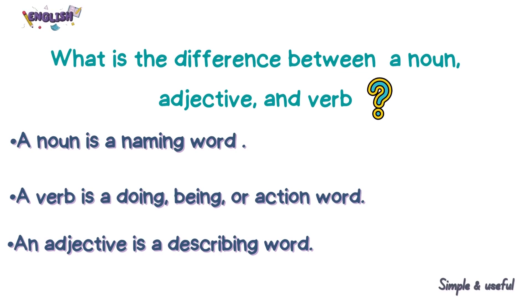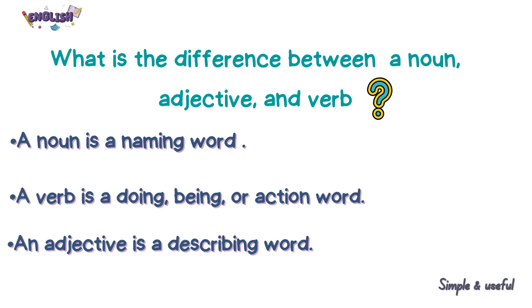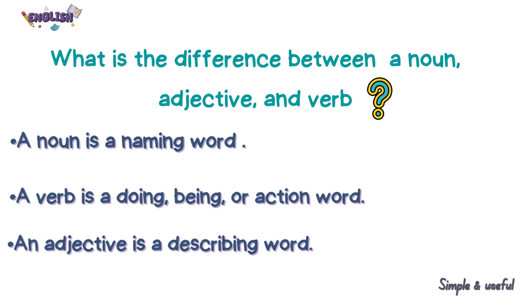What is the difference between a noun, adjective and verb? A noun is a naming word. A verb is a doing, being or action word. An adjective is a describing word.